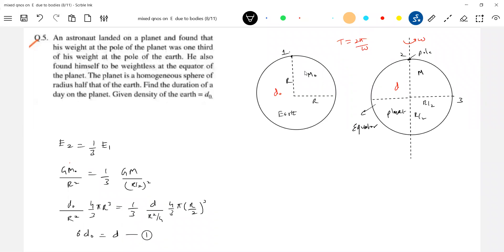After this, what to do now? He's asking - he also found himself to be weightless at the equator. What do you mean by that? Means the gravitational phase, the weight here, should become equal to the weight of the person, should be equal to the centrifugal force. At this particular point what actually happens is this is the mass of the person.